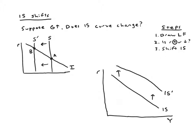That was one example of figuring out an IS shift. There are lots of other examples to work through at home — plenty of practice questions in the book. You could think about what if firms wanted to invest more (that would shift the investment curve), what if consumers wanted to save more for retirement, or what if the government changed taxes (affecting public saving). Anything that shifts one of the two loanable funds curves will change interest rates and cause the IS curve to shift. Thanks for watching — next we'll turn to thinking about the LM relationship.